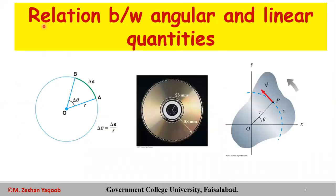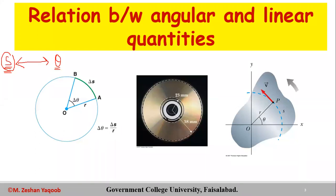When we talk about the relation between angular and linear quantities, as you can see in this first figure, there is a rotational motion with a linear quantity relationship developed. The first part involves an arc and the angle theta. Here, s is basically the linear distance while theta is the angular displacement, and s is directly proportional to theta.